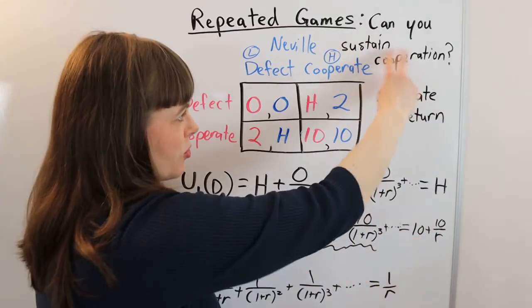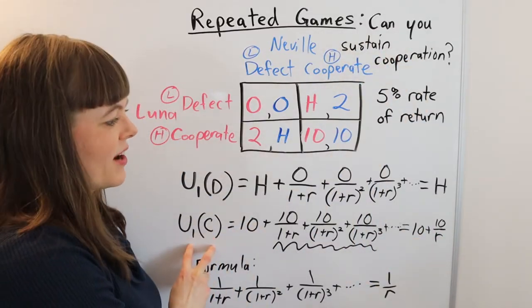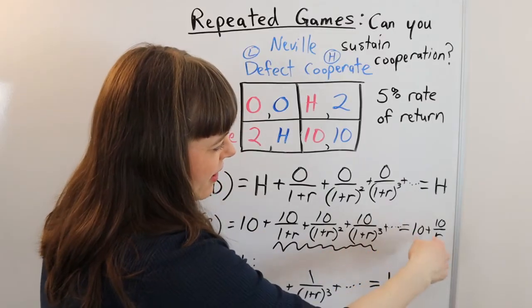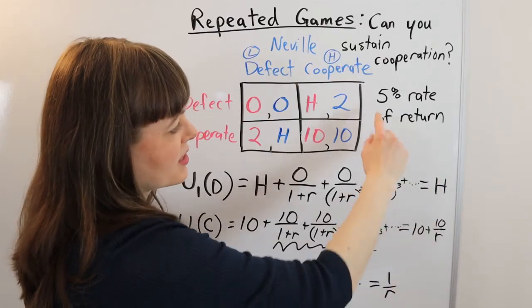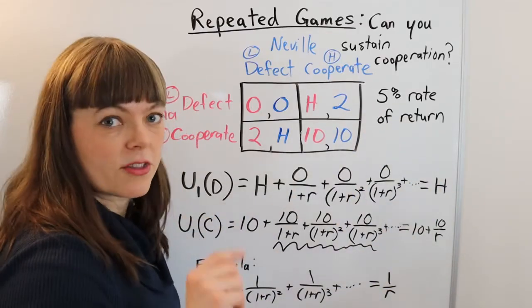And if we go back to our original question, when will she actually cooperate? She'll cooperate when this value is greater than this. And we can plug in the rate of return here, which is basically 0.05.